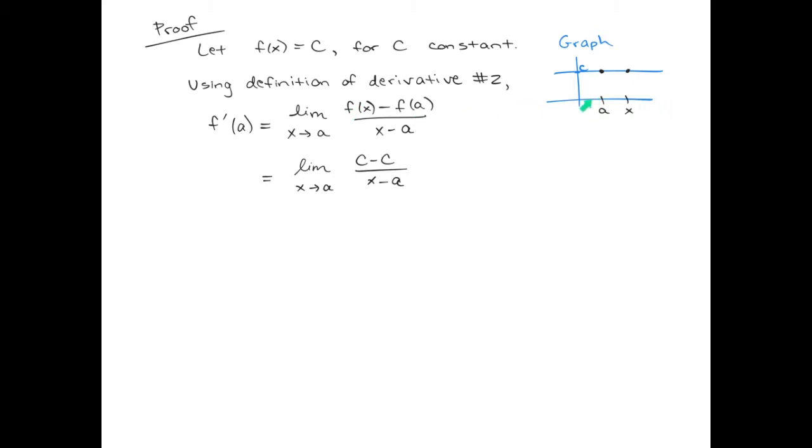any x value you have, when you plug it into the function, the height of the function is c, so f(x) is c, and f(a) is also c. As you know, c minus c is equal to zero, and this is before we ever take the limit.